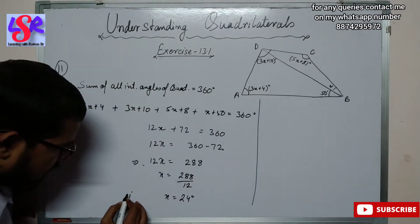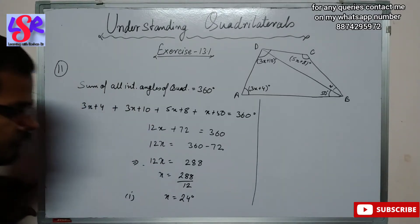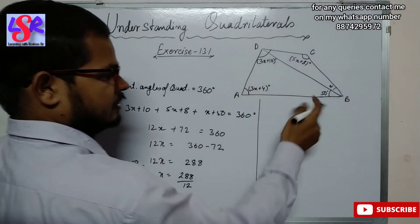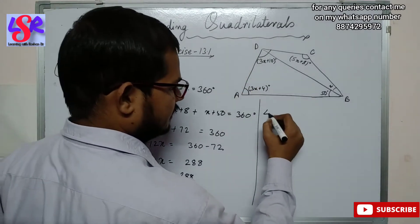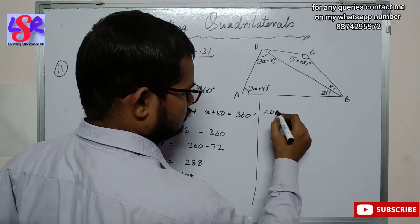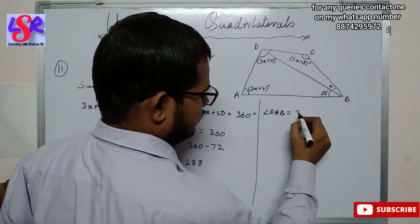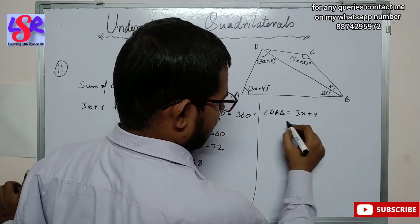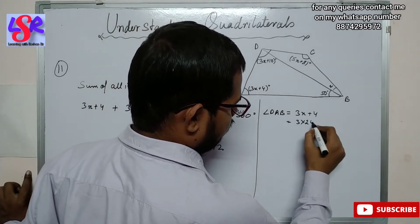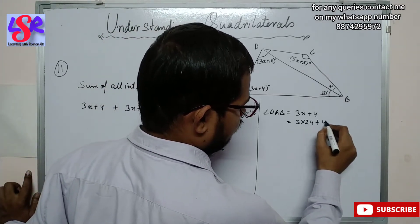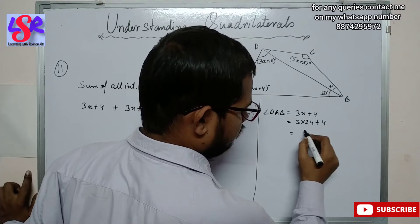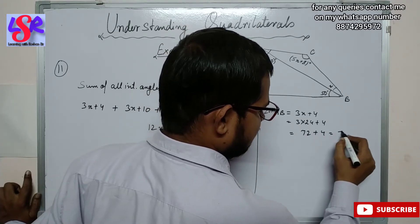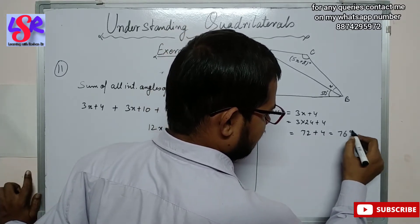This was our first part to be calculated. Then we have to find angle DAB. Angle DAB equals 3x plus 4, that is 3 into 24 plus 4. 3 into 24 is 72, plus 4, that is 76 degrees.